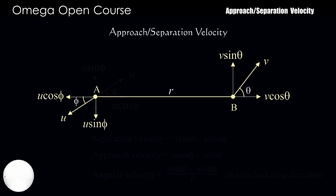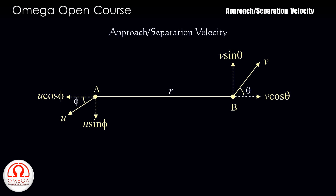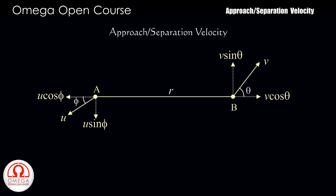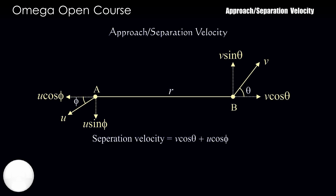Let us consider another example. In this case too, the radial and tangential components of velocity of A are U cos phi and U sin phi respectively, but the direction is opposite. The velocity of B is the same as in the previous case. In this case both particles are moving away from each other. Therefore, their separation speed is the sum of their radial components, that is V cos theta plus U cos phi.